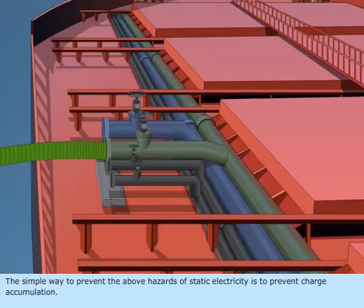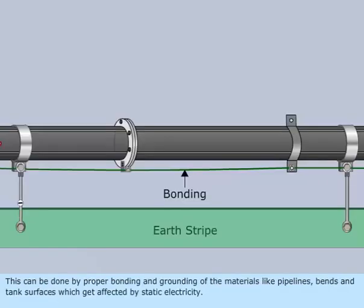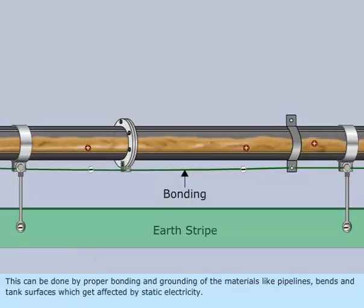The simple way to prevent the above hazards of static electricity is to prevent charge accumulation. This can be done by proper bonding and grounding of the materials, like pipelines, bends, and tank surfaces, which get affected by static electricity.